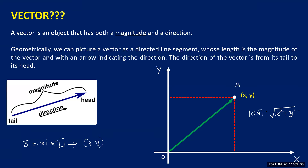We represent the magnitude as the modulus of OA — modulus of OA equals the square root of x squared plus y squared. In a similar way, we can represent a three-dimensional vector: when it is xi plus yj plus zk, we take a third axis, and that vector will be somewhere in the space.